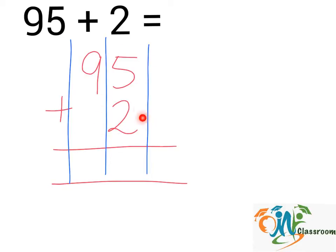5 plus 2 will give us 7. And in this column, we have 9, so we will write it down. And the answer will be 97.